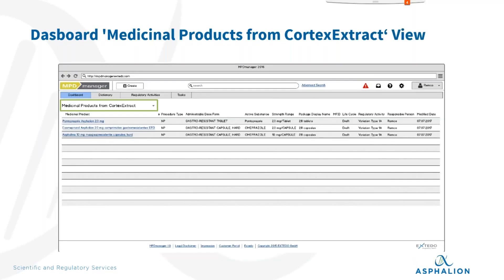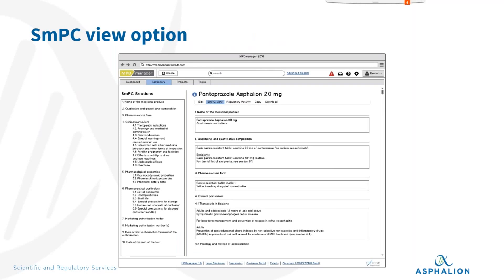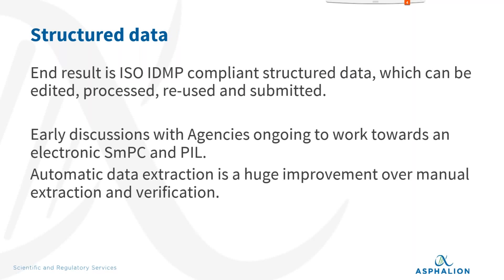The idea is: once data is exported from the extraction tool, we can import it into MPD Manager. We can then perform regulatory activities, variations, and have an SmPC view. In the tool there is a button to export all products into the dictionary, so data extracted from the SmPC becomes automatically available there. You can see a last-activity view in MPD Manager, see which products were imported from the extraction tool, view the structured data, see product names, ATC codes, additional monitoring — all extracted data elements. In the future, we want to also generate a new SmPC document from this tool — structured data leading to ISO IDMP compliant output that can be edited, processed, reused, and submitted.